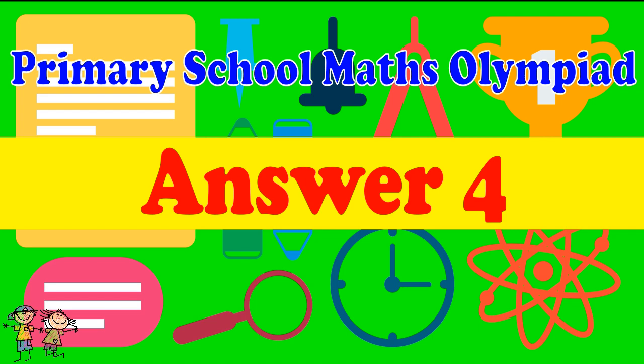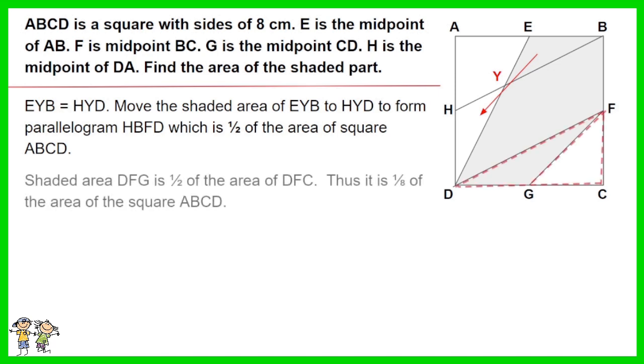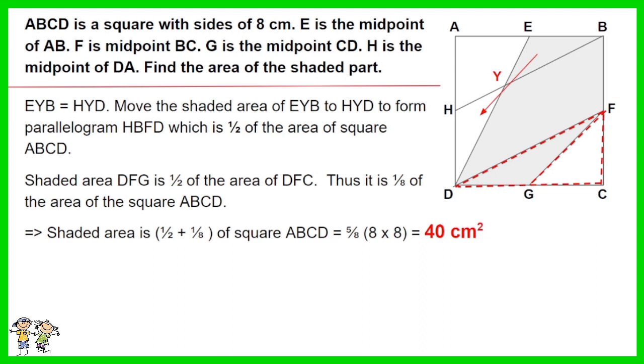Answer for question 4: EYB equals HYD. Move the shaded area of EYB to HYD to form parallelogram HBFD, which is half of the area of square ABCD. Shaded area DFG is half of the area of DFC. Thus it is one-eighth of the area of square ABCD. As such the shaded area is half of ABCD plus one-eighth of ABCD, which is 5 over 8 times 8 times 8. The answer is 40 centimeters squared.